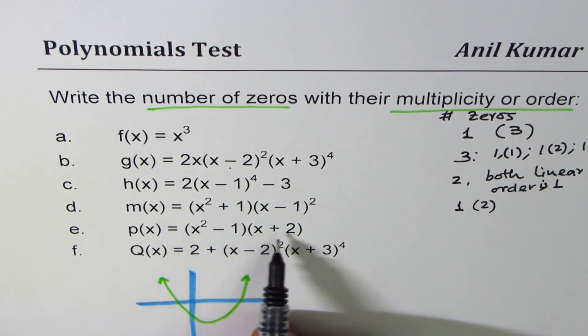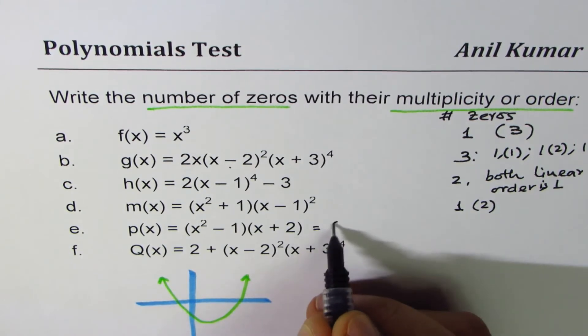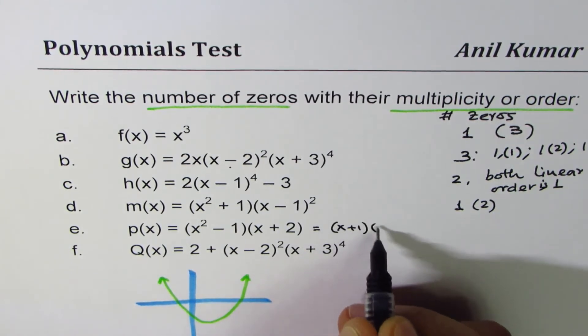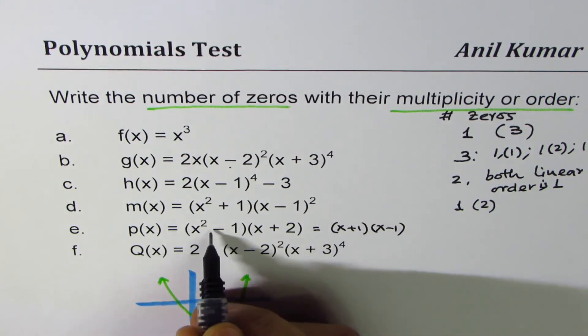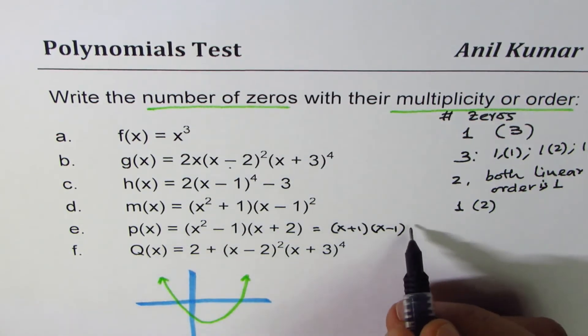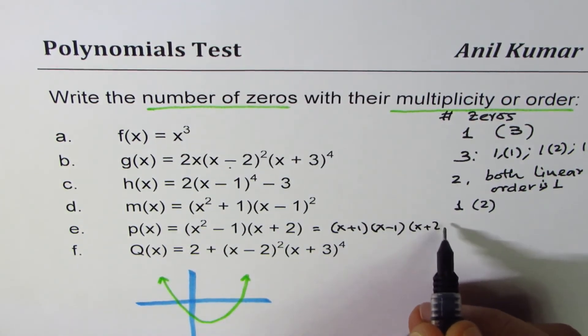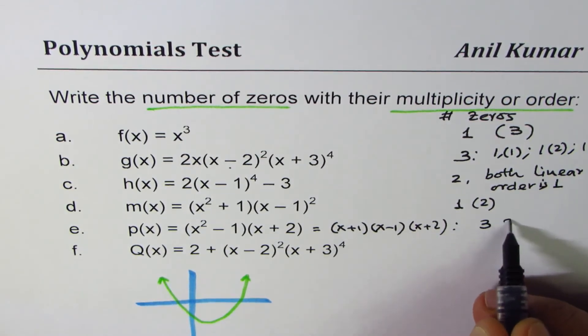x²-1 times (x+2) could be written as (x+1)(x-1), that's the factoring of x²-1 difference of squares, plus two. So that gives us three zeros, and all of order one.